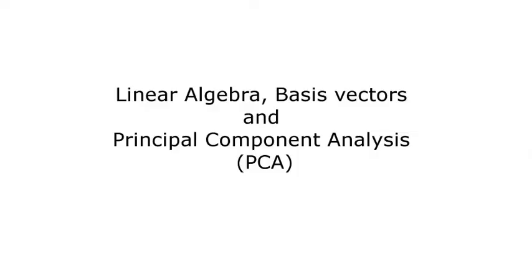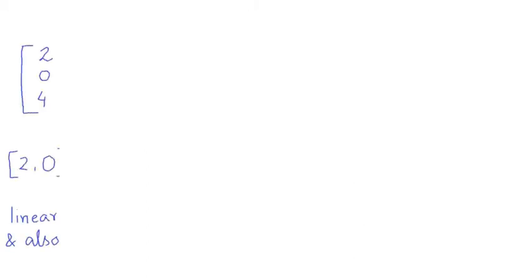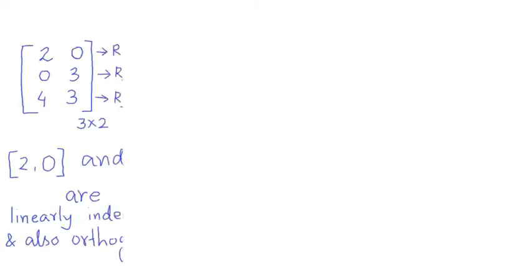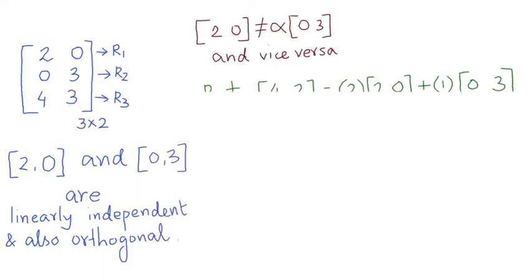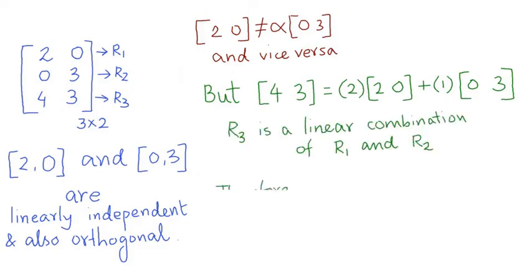Now how are you going to use linear algebra to explain PCA? Well, consider a matrix with three rows. Here rows 1 and 2 are linearly independent and orthogonal, meaning one is not a scalar multiple of the other. But row 3 is a linear combination of rows 1 and 2. So R1 and R2 form the orthogonal bases for the matrix.